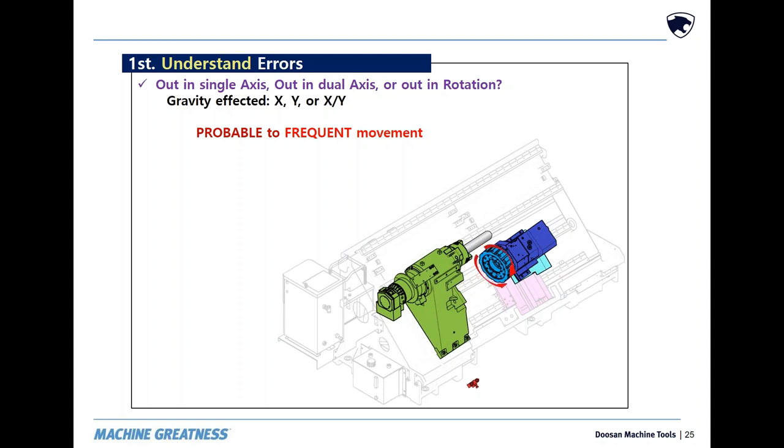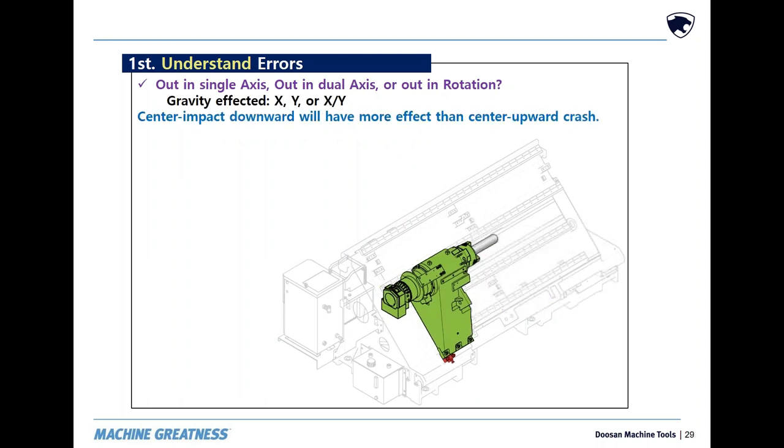At impact, the turret has to either break or go up, down, or through. Gravity can also enhance impact.